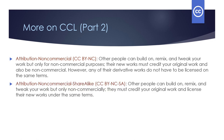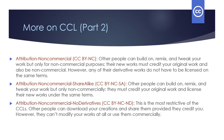The fifth kind is known as Attribution Non-Commercial ShareAlike, or CC BY-NC-SA. Other people can build on, remix, and tweak your work, but only non-commercially. They must credit your original work and license their new works — the derivatives — under the same terms. The sixth and final type is Attribution Non-Commercial No Derivatives, or CC BY-NC-ND. This is the most restrictive of the CCLs. Other people can download or make copies of your creations and share them provided they credit you; however, they can't modify your works at all or use them commercially.